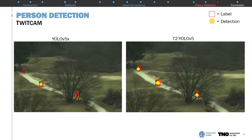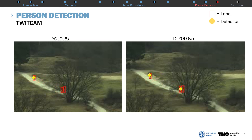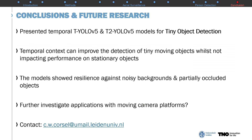From qualitative results of this experiment, we found that T2-YOLO-V5 improves detection for both tiny far-away objects as well as partially occluded objects. In both these cases, motion cues can aid the detection model to locate tiny objects even when appearance features are small or disrupted by background objects. To conclude, we presented two spatial-temporal deep learning models for tiny object detection. We found that introducing temporal context to deep learning models can improve the detection of tiny moving objects compared to the single-frame baseline, whilst not impacting the performance on stationary objects. Furthermore, the approaches showed resilience against noisy backgrounds in the aerial surveillance application and partially occluded objects in the person detection domain. In future research, we are planning to further evaluate these approaches for applications with moving cameras. Thank you for your time.